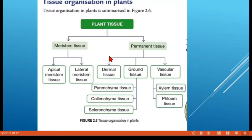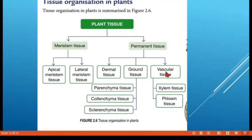Now for plants: plant tissue is divided into two types — meristem tissue and permanent tissue. Meristem tissue is divided into apical meristem tissue and lateral meristem tissue. Permanent tissue is divided into three types: dermal tissue, ground tissue, and vascular tissue. Ground tissue is further divided into parenchyma tissue, collenchyma tissue, and sclerenchyma tissue. Vascular tissue is divided into xylem and phloem tissue.